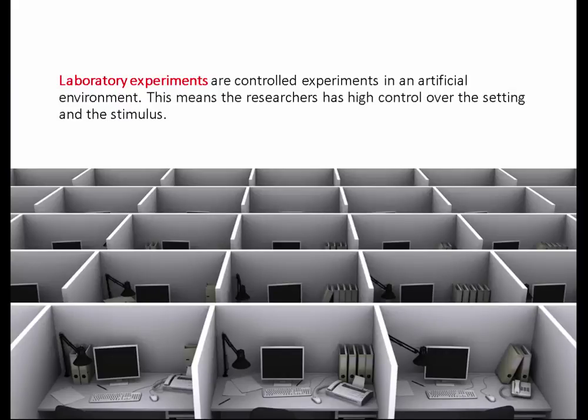Laboratory experiments are controlled experiments in an artificial environment — the researcher has high control over the setting and the stimulus. This is how social labs look: sociologists and psychologists invite people in, they sit at computers, they see something on a screen, and one half gets a blue pill and the other gets a red pill — different stimuli. Colleagues of mine run labs like this in Oxford and in Zurich.